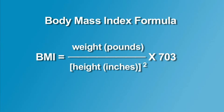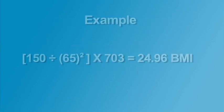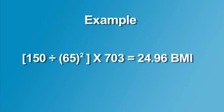Here's an example of the BMI calculation for a student weighing 150 pounds and who is 5 feet 5 inches, or 65 inches tall. The optional Fitnessgram software is programmed to calculate BMI from the height and weight measurements.